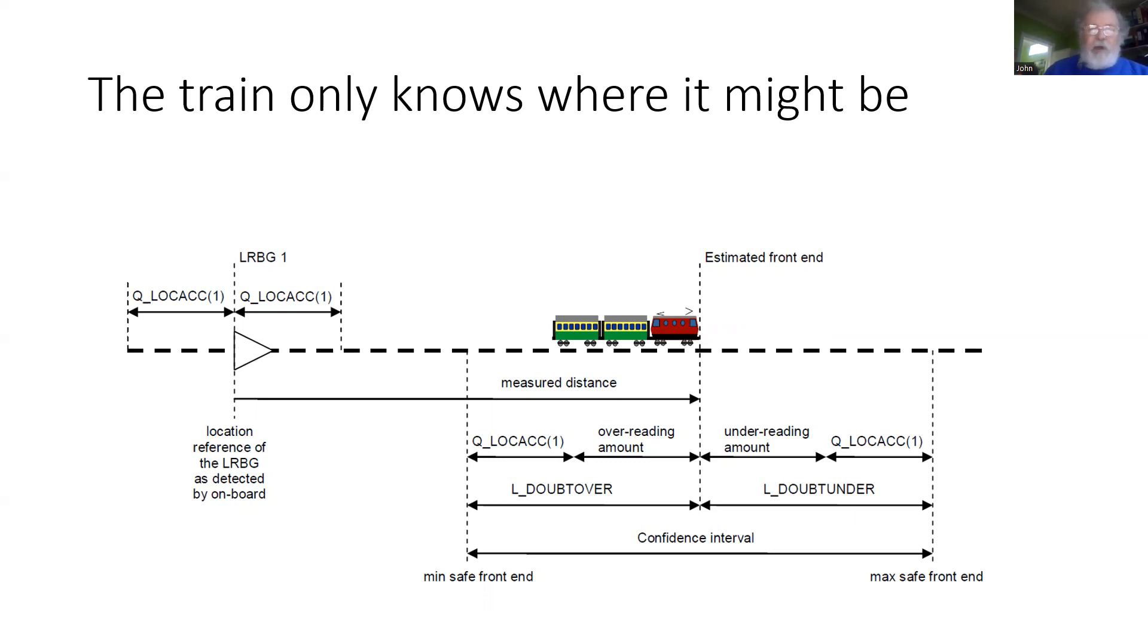So the place that a train reports it to be is an estimate. And it provides a range of distances from the reference it believes that it is definitely within.